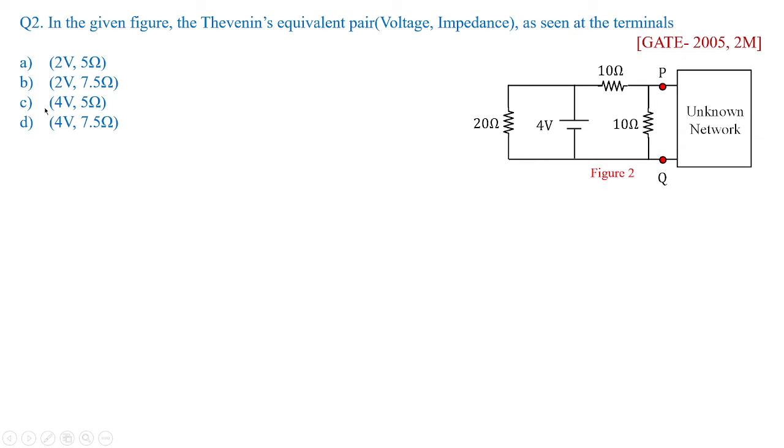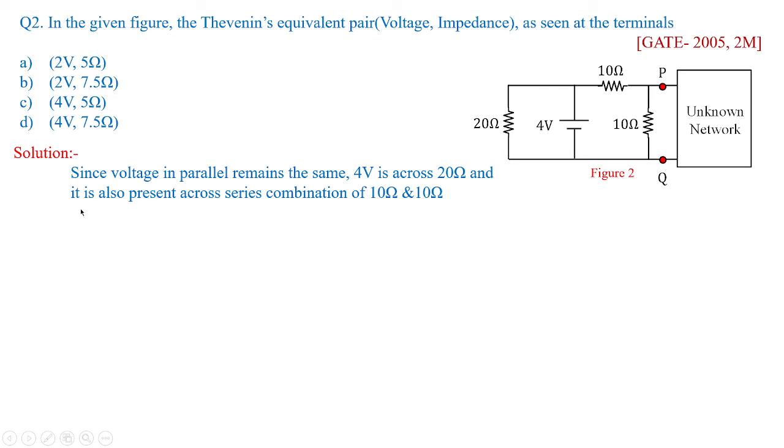So if it all we are able to obtain equivalent voltage, we can eliminate two options. So for that what we are going to do? Now, since voltage in parallel remains the same, 4 volts is across 20 ohms, that is this particular left hand side of the circuit, and it is also present across the series combination of 10 and 10.